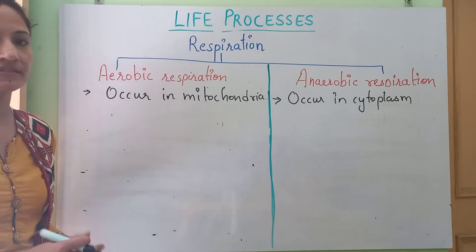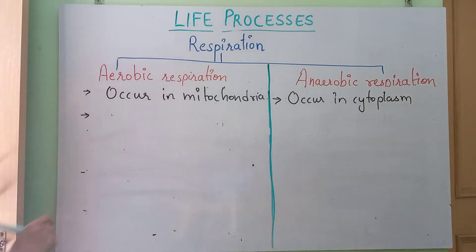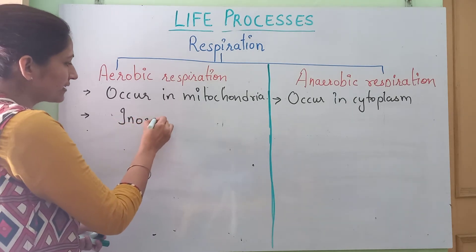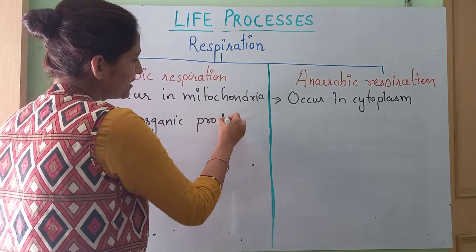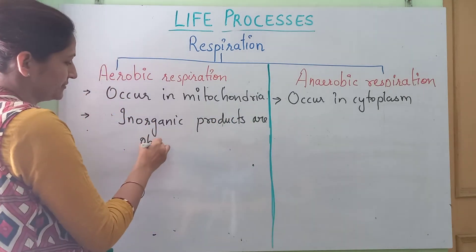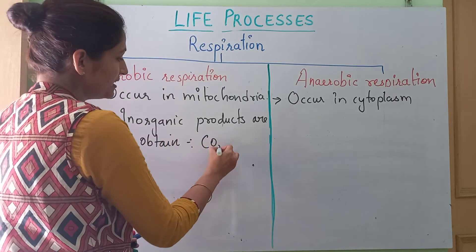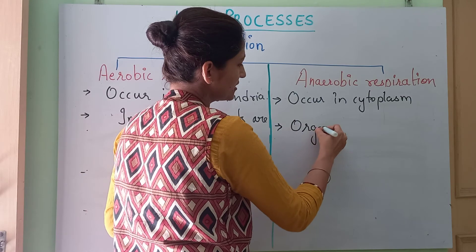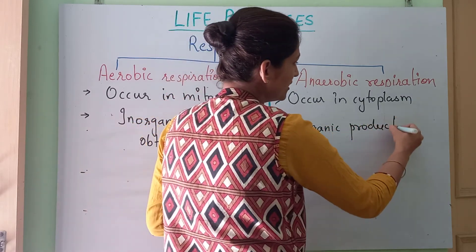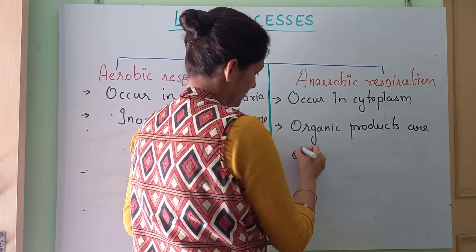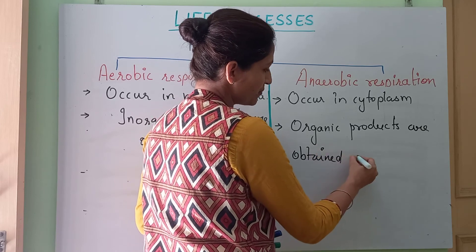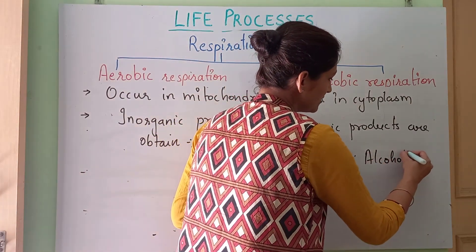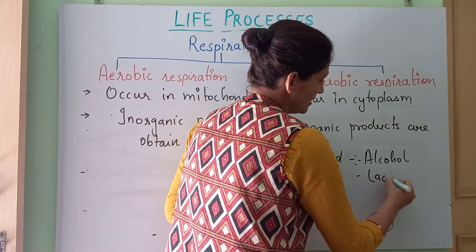In the case of aerobic respiration, the products obtained are inorganic. Those inorganic products are carbon dioxide and water. In the case of anaerobic respiration, organic products are mainly obtained with very few inorganic products. The organic products obtained as a result of anaerobic respiration are alcohol and lactic acid.